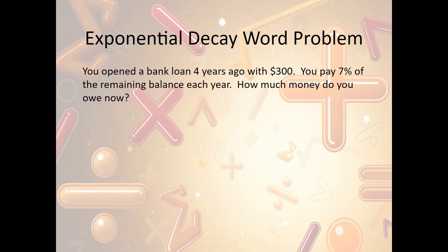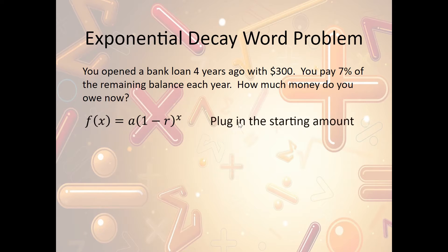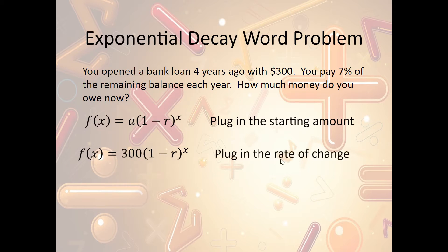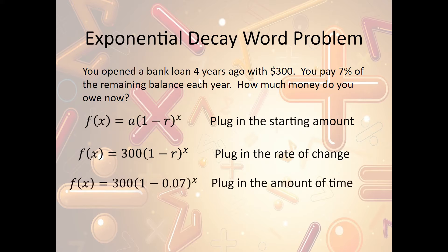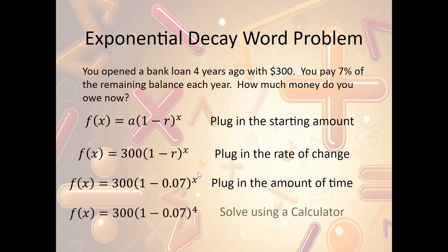Let's look at one more exponential decay word problem. You opened up a bank loan four years ago with $300, and you pay 7% of the remaining balance each year. How much money do you owe now? It's decay because the amount owed is going down. Using f(x) = a · (1 − r)ˣ: starting amount a is $300; rate r is 7% or 0.07; time x is 4 years. Plugging that into a calculator, we get that we now owe $224.42.